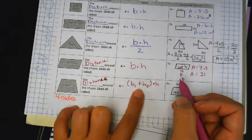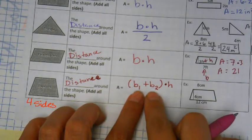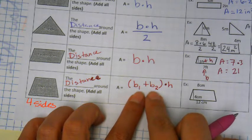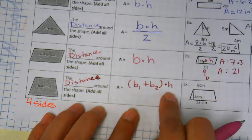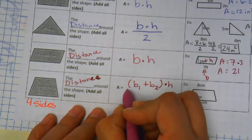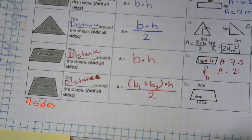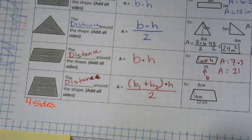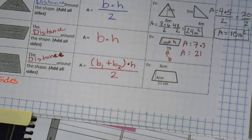Does anybody know what parentheses makes us do? Do that first, right. The parentheses is telling us, 'hey, you've got to do this first — add these two numbers first, then multiply by your height.' Then divide by two. So it's very similar to the triangle where we divide by two, but you're adding before you multiply. That's something new.